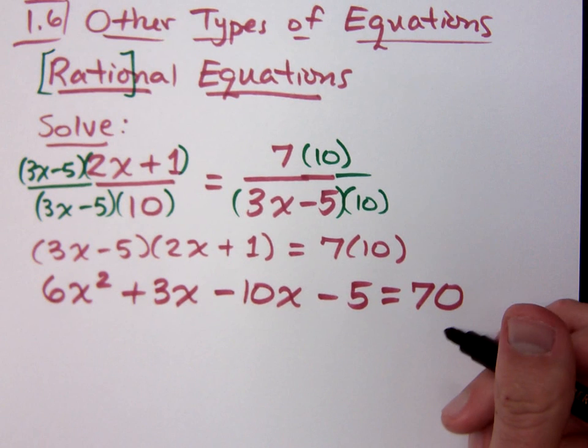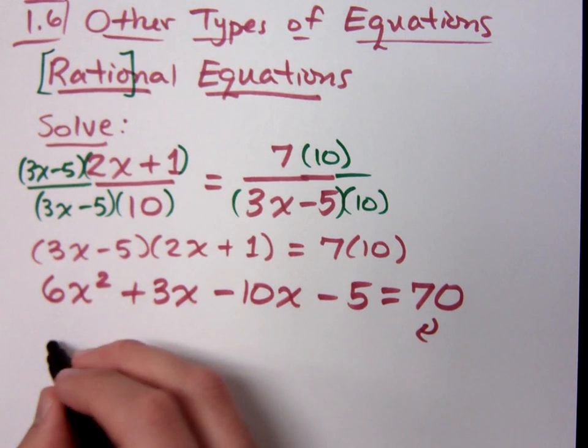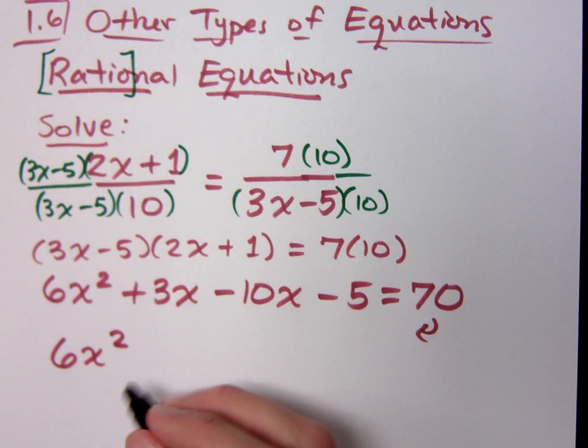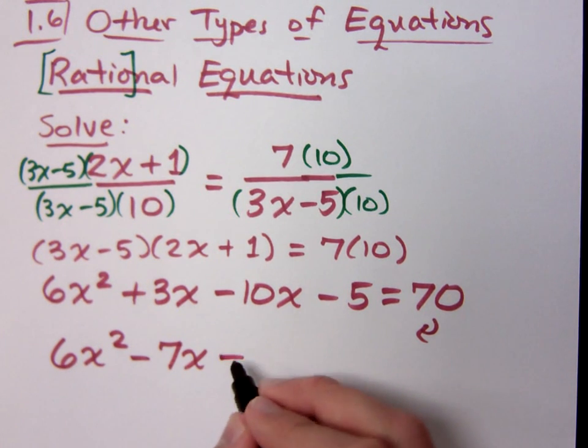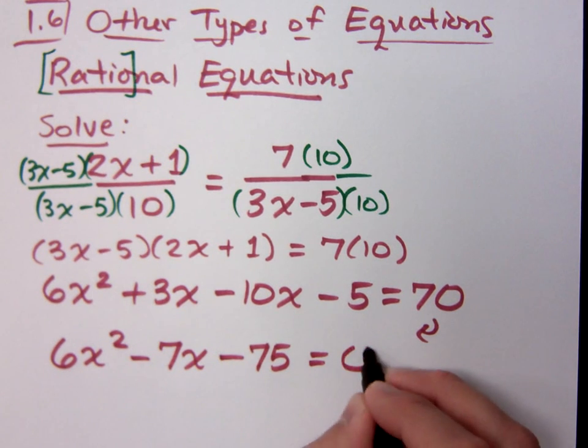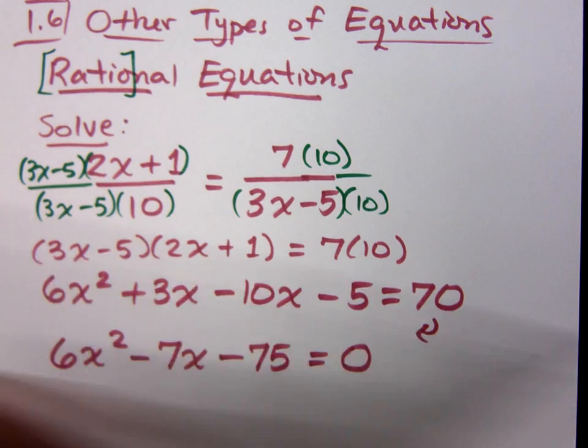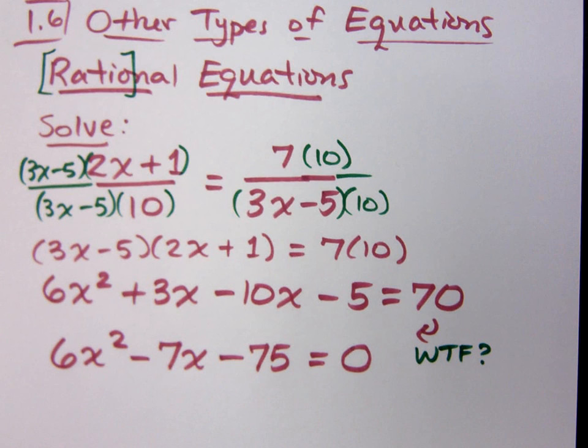Now before I go and I try to solve this, I need to move the 70 over. I know this is quadratic, so let's get everything together. So I get 6x squared, combine like terms, and I have minus 7x minus 75 is equal to 0. First thought that should go through your mind is WTF. Will this factor?